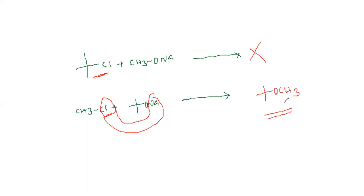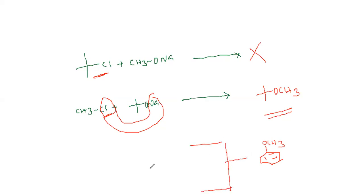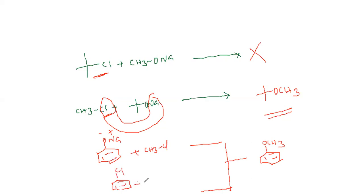This is actually Williamson synthesis — preparation of ethers. For example, they will give the question: how to prepare anisole (ArOCH3)? They will give two conditions. The first: sodium phenoxide with methyl halide. The second: chlorobenzene with sodium methoxide.